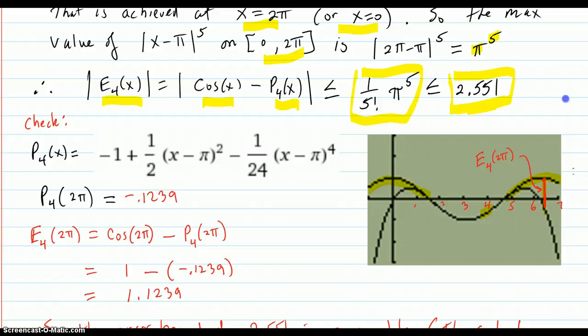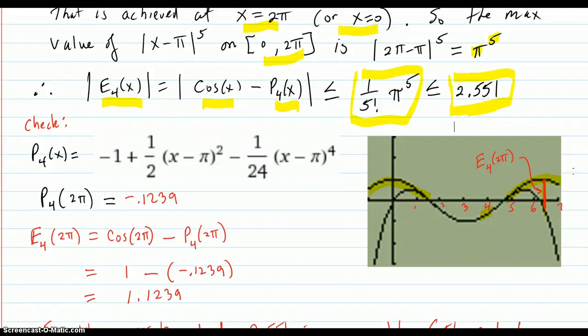Sure enough, in the check, here's P4. You can figure that out or get it from Wolfram Alpha. P4 evaluated at 2π is -0.1239, sticking 2π in there.